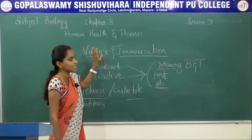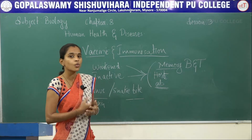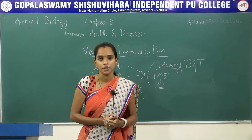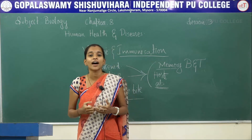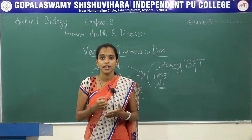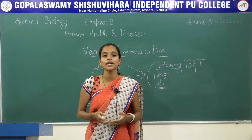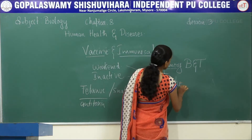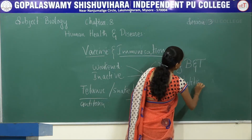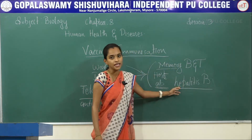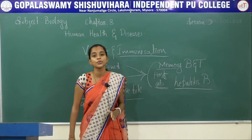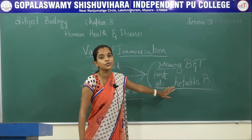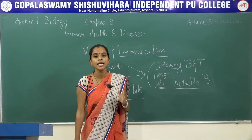Recombinant DNA technology, which will be studied in detail in the biotechnology chapter, has enabled the production of certain forms of antibodies and antigens in bacteria or yeast. An example is hepatitis B, which can be treated using antibodies produced within yeast, based on recombinant DNA technology.